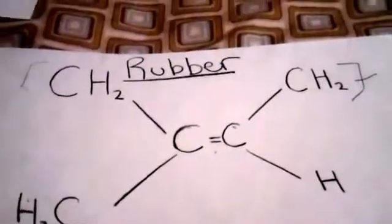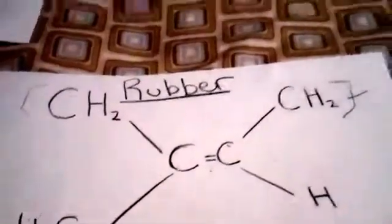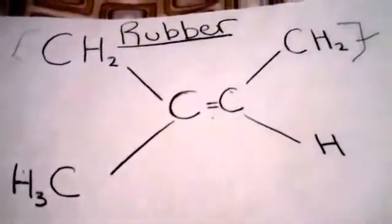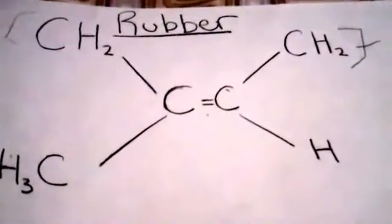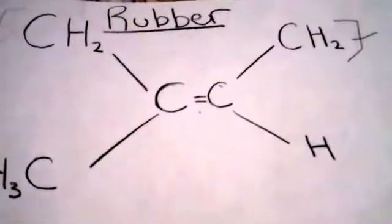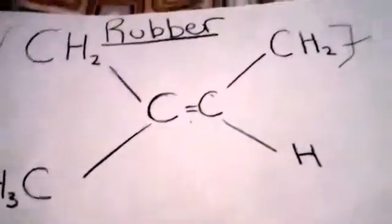Rubber is naturally occurring because it comes from a tree. You are able to extract the rubber by tapping into this tree and rubber will come out in the form of liquid. The chemical makeup of rubber looks like this.